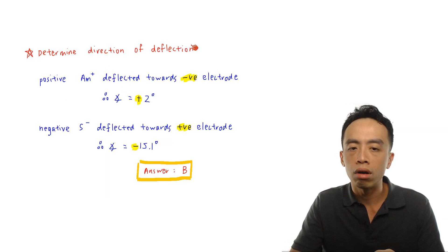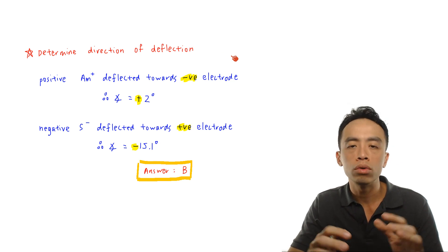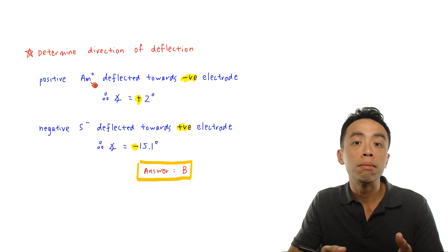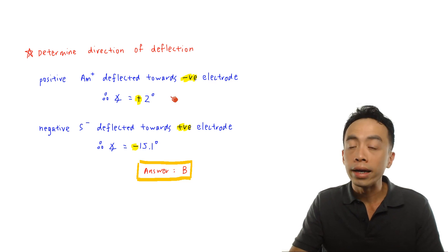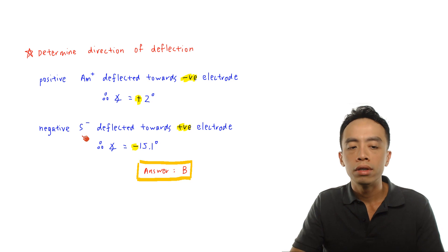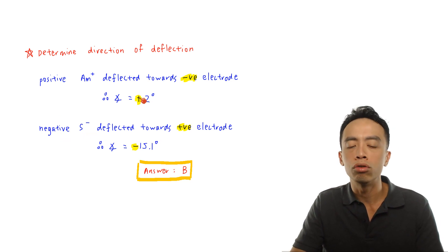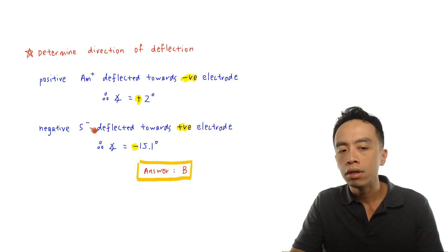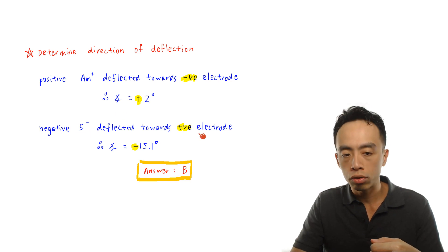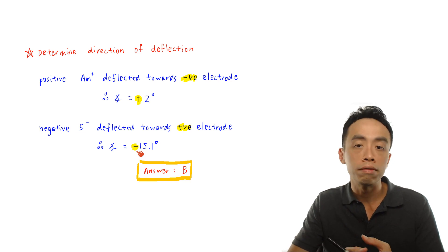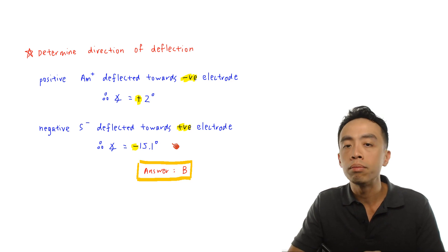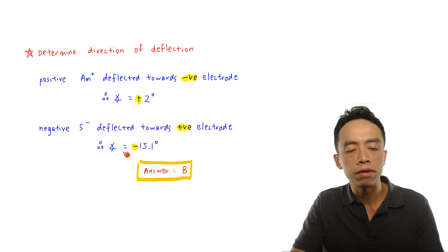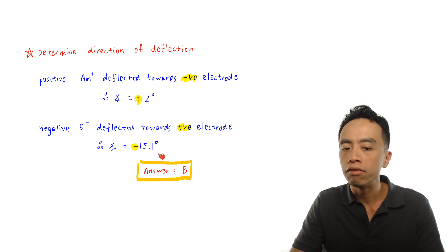Finally, we want to determine the direction of deflection. Looking at the diagram, Am+ is positively charged and deflected towards the negative electrode, giving plus 2 degrees. S minus is negatively charged, so it will be deflected towards the positive electrode — opposite direction. Therefore the angle of deflection for S minus should be negative. The magnitude is 15.1 degrees, so the answer is minus 15.1 degrees.